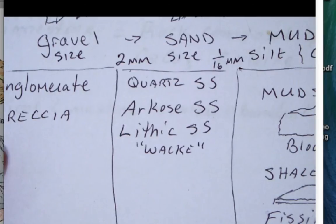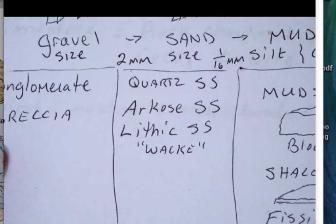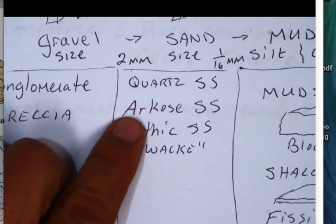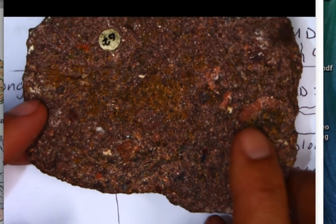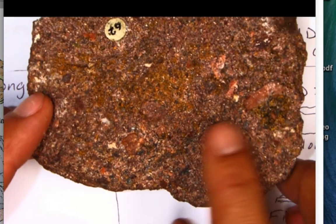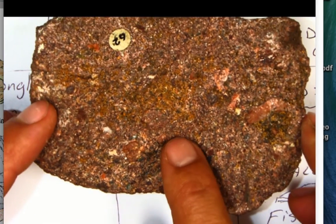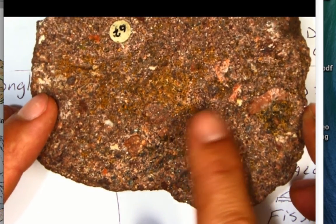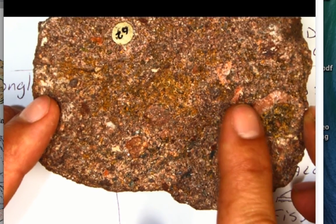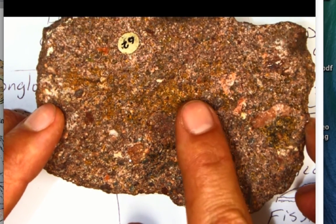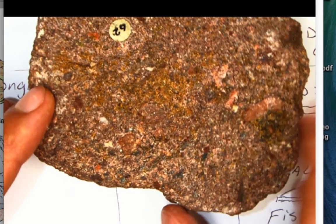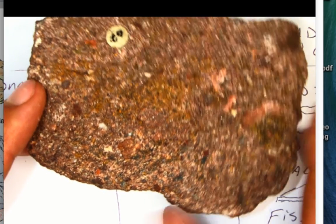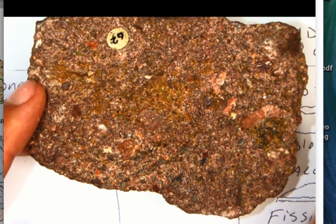This arkose sandstone is characterized by having feldspar, particularly potassium feldspar. So here's an arkose. So you see these big feldspars. In fact, this one is almost bordering into gravel size. But you can again see the sand size grains and it's composed with a lot of feldspar. There's also quartz in here as well. In fact, it's about 50% quartz, 50% feldspar. Again, an arkose, feldspar and quartz.